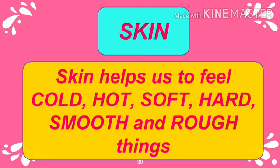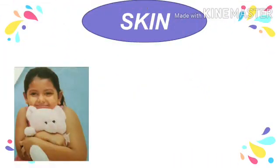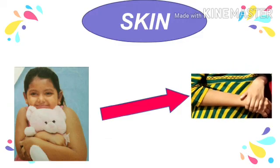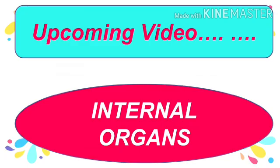The last sense organ is skin. Skin helps us to feel cold, hot, soft, hard, smooth, and rough things. See in the picture — a girl is holding a teddy bear tightly in her arms and she feels the softness of the teddy bear with the help of her skin.